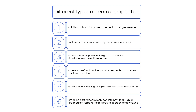At the simplest, changes in team composition can involve the addition, subtraction, or replacement of a single member. Slightly more complex is a situation when multiple team members are replaced simultaneously. Third, a cohort of new personnel might be distributed simultaneously to multiple teams — for example, police officer academy graduates assigned to different teams in the police department. Fourth, a new cross-functional team, such as a task force, may be created to address a particular problem. Fifth, simultaneously staffing multiple new cross-functional teams.